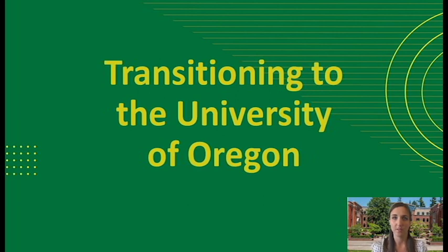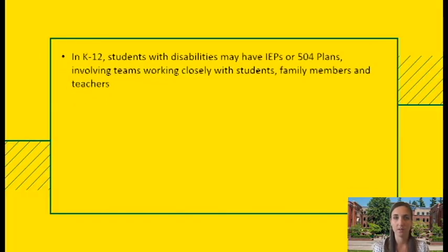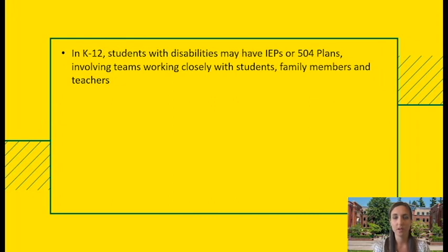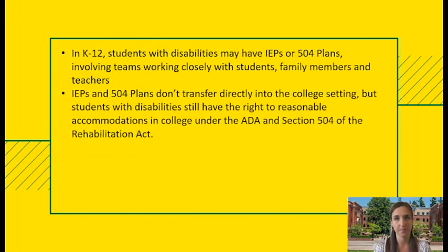If you did receive accommodations previously, it's important to know how the process of using accommodations in college might be different. In kindergarten through 12th grade, students with disabilities may have an IEP or 504 plan, which may include specific accommodations or modifications to support that student's learning, access, and engagement. IEPs and 504s often involve a team from the school working closely with students' parents and families to determine the most effective support. While IEPs and 504 plans don't transfer directly for eligibility into the college setting, sharing information about past accommodations can be useful.